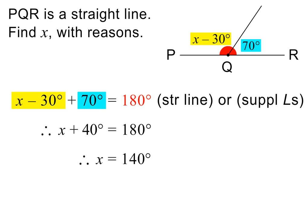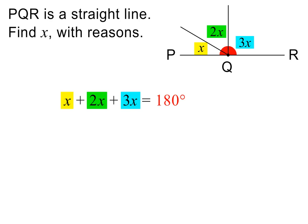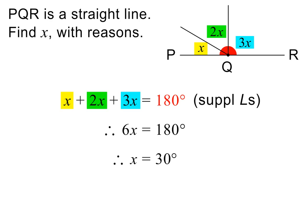Here is a similar question. Please pause to try it on your own first. Because we have adjacent angles on a straight line, we can write the following, and the reason is supplementary angles. Next, we add like terms on the left, giving us 6X equals 180 degrees. We then divide both sides by 6 to get the answer. Please pause to check my working.